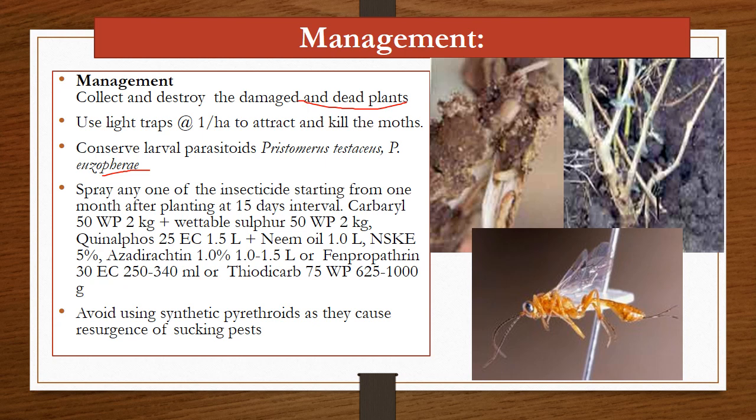Coming to the management: collection and destruction of the damaged dead plants effectively controls the pest, because the hibernating larvae are present inside the old or dead stems. Use light traps at one per hectare to attract and kill the moth when the crop is not present and also during crop growth. Release larval parasitoids such as Pristomerus desatosus and Pristomerus jujupyra.